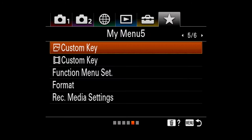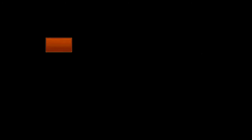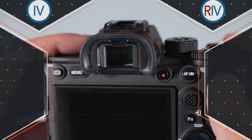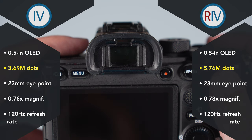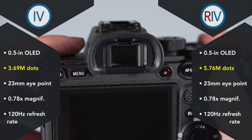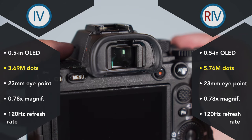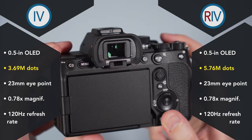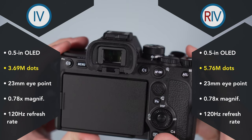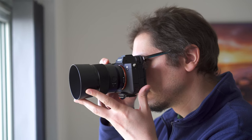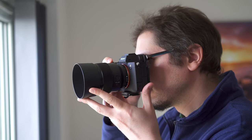Both cameras have 12 custom buttons and a function menu that can be configured independently for stills and video. The a7 IV has an electronic viewfinder with more resolution in comparison to the a7R IV, but every other specification is the same. The extra resolution is definitely welcome on the R model, but I didn't find the difference striking when using the two cameras on the same day. Needless to say, they are two excellent viewfinders.